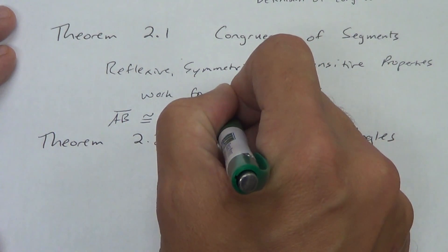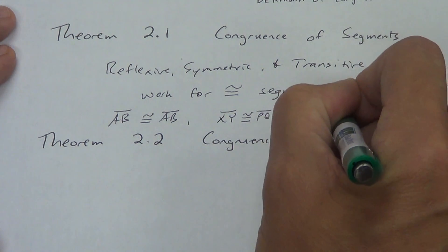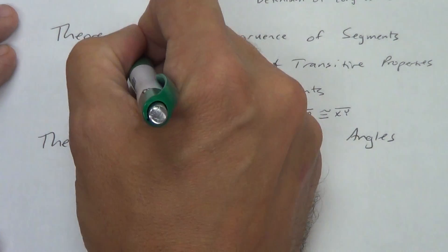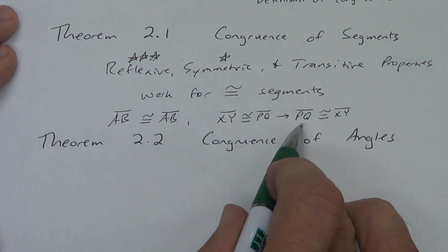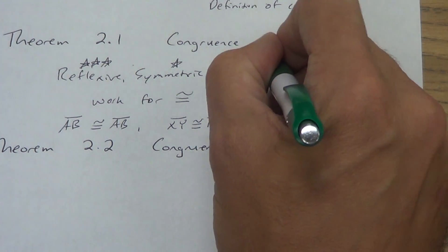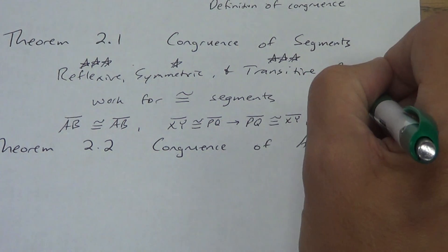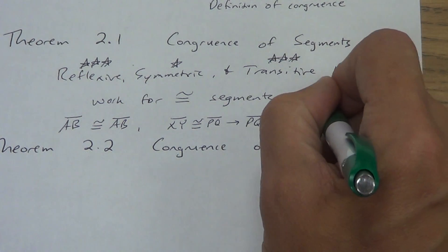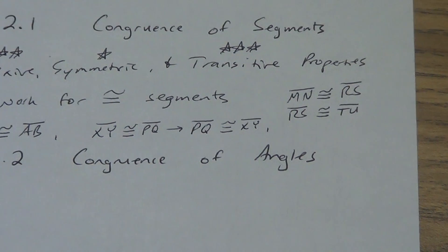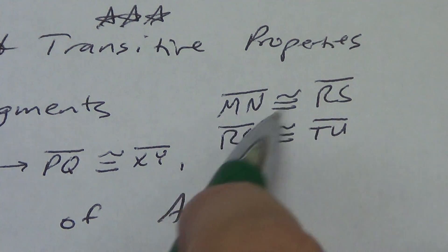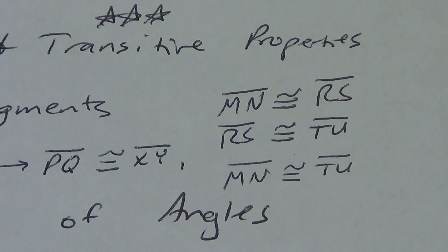Symmetric: XY is congruent to PQ — we can switch it and say PQ is congruent to XY. We don't do that very often. Reflexive is very important — three stars. Symmetric — one star. But all this says is just like we did for equals where we can switch it, we can do it for congruence. Transitive is three stars — we use this one a lot. So maybe MN is congruent to RS, and RS is congruent to TU. We see RS in the middle — it's the same. Skip the middle: MN is congruent to TU. That's the whole idea of the transitive property of congruence, and it works for segments.